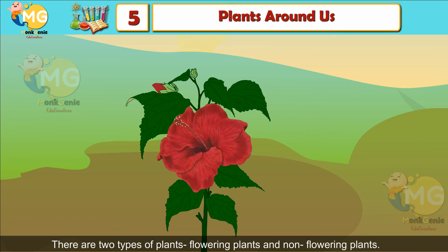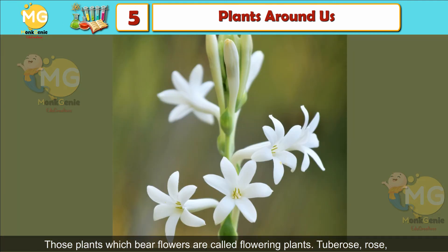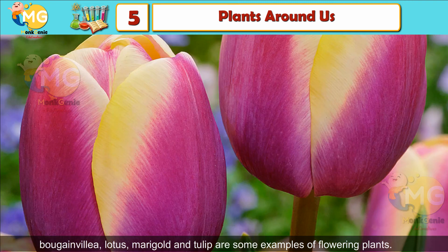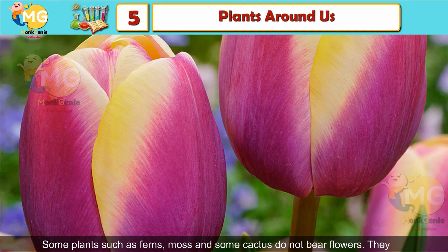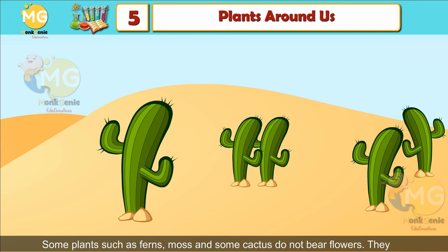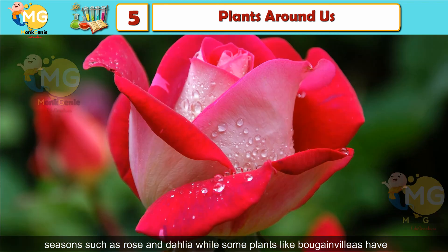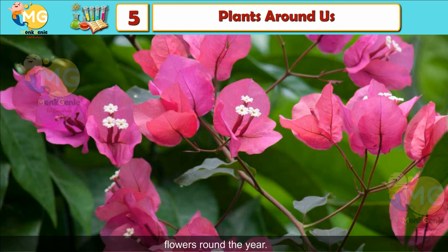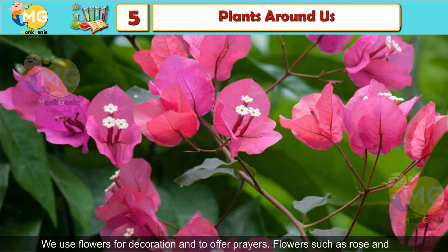There are two types of plants: flowering plants and non-flowering plants. Plants that bear flowers are called flowering plants; tuberose, rose, bougainvillea, lotus, marigold, and tulip are examples. Plants such as ferns, moss, and some cactus do not bear flowers and are called non-flowering plants. Some plants have flowers only in certain seasons, like rose and dahlia, while others like bougainvillea have flowers year-round.